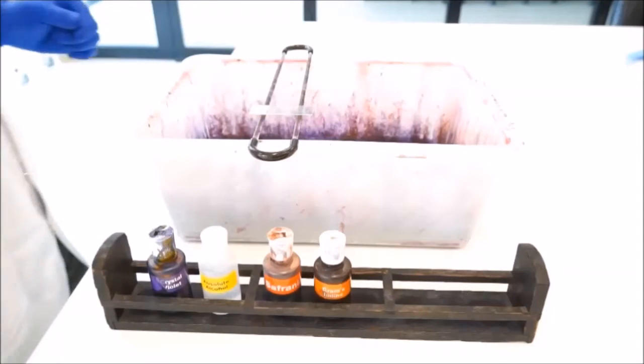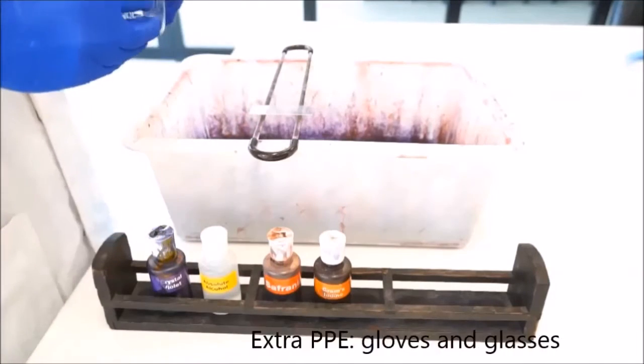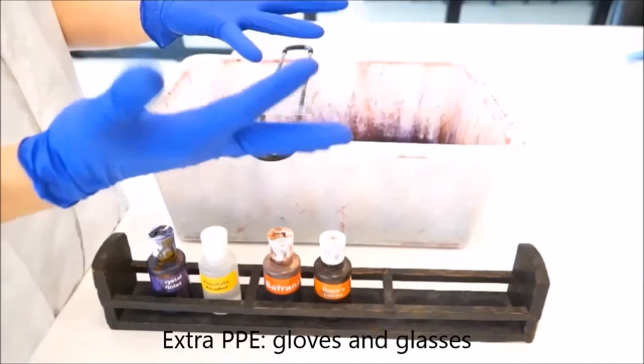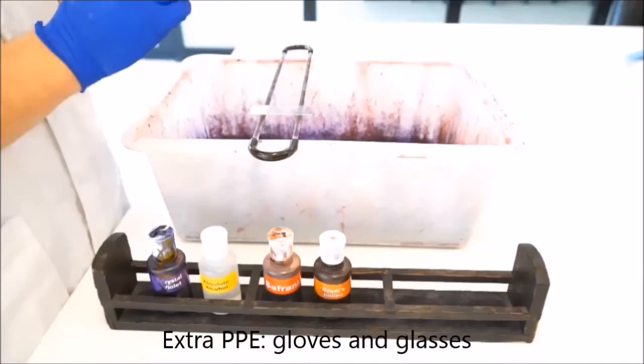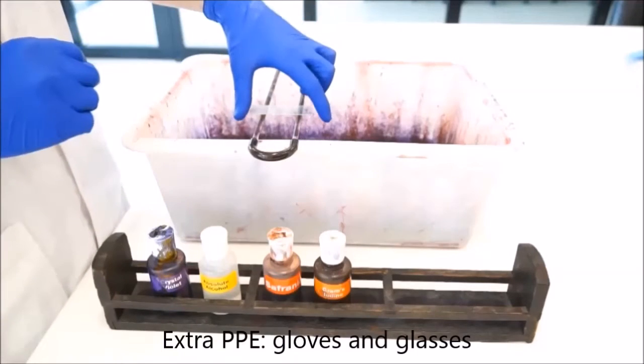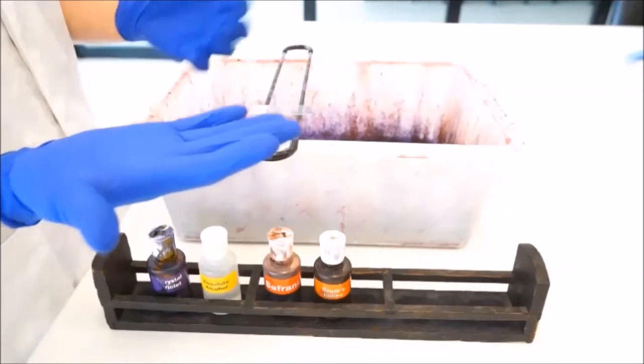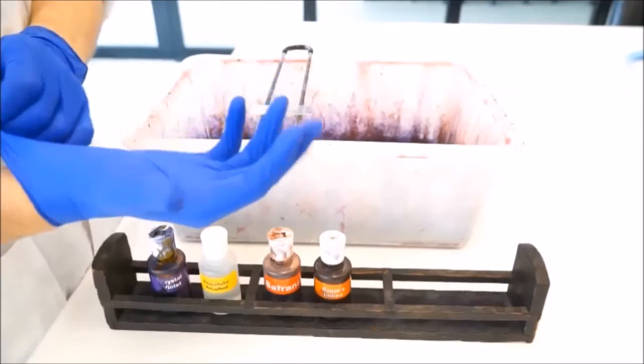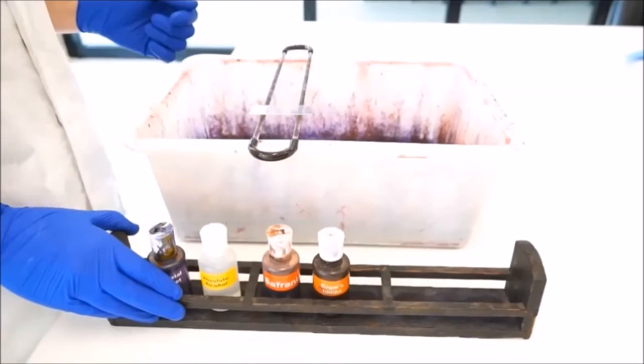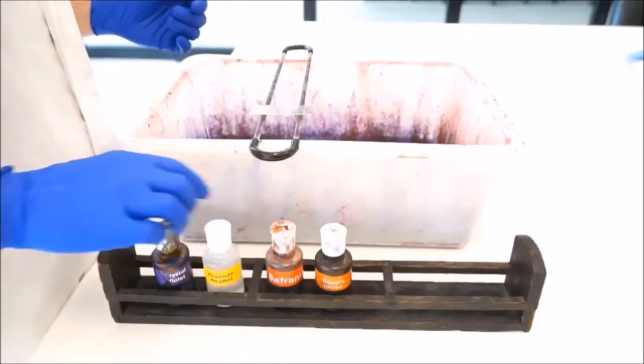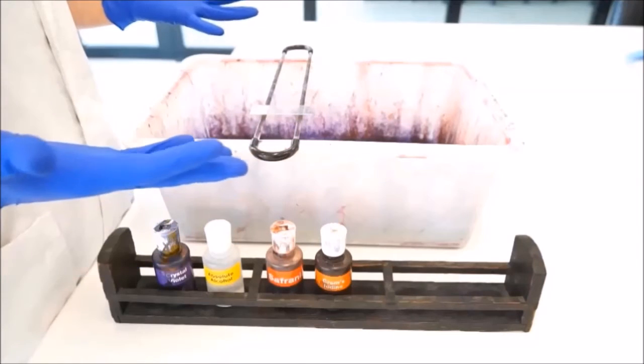At this point you want to be putting on safety glasses - you don't want these stains in your eyes - and also gloves. Previously when making the heat-fixed slide you wouldn't want gloves because gloves and Bunsen burners don't mix, but right now some of these stains are a little bit toxic so I'd be wearing gloves.